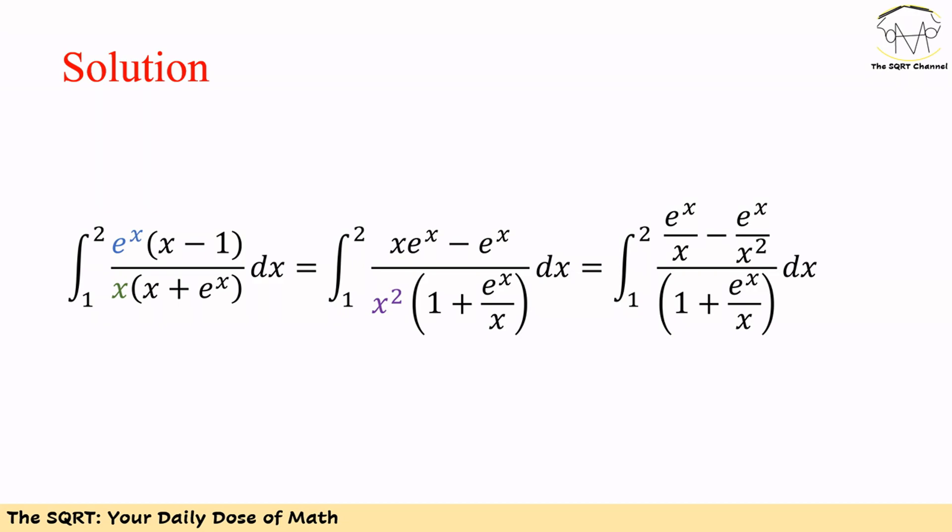Let's remove x squared from top and bottom. We will then have (e^x over x minus e^x over x squared) for the numerator, and (1 plus e^x over x) for the denominator.